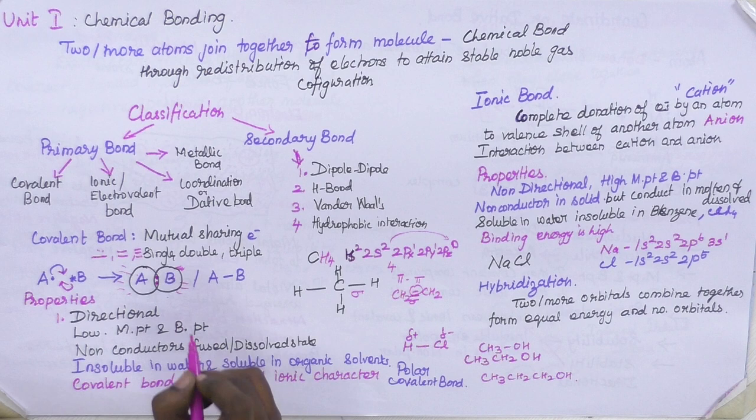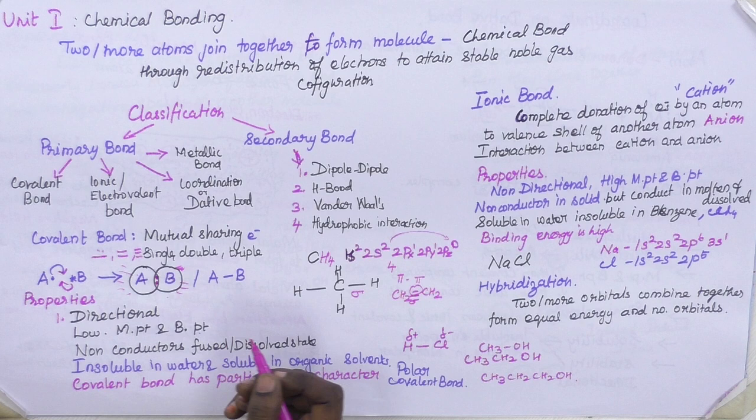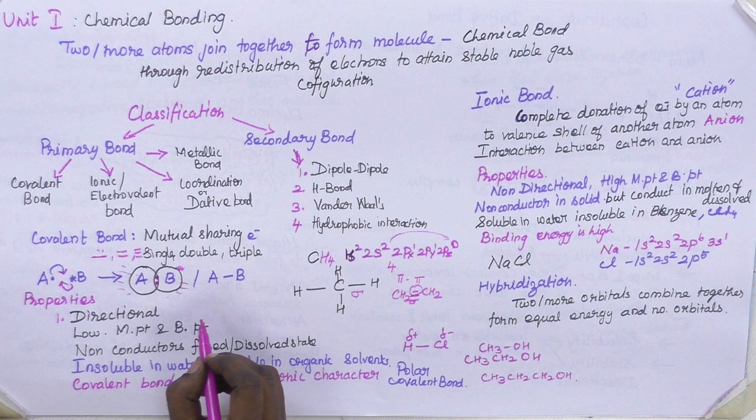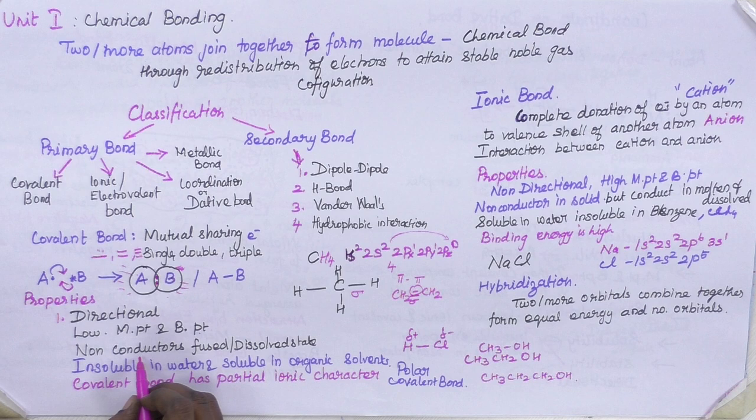Second, covalent compounds have a low melting point and boiling point compared to ionic compounds. When we see the ionic bond properties, we can understand why covalent molecules have low melting and boiling points. In terms of conduction — electrical and thermal — covalent compounds are non-conducting in nature, both in the fused state and in the dissolved state.